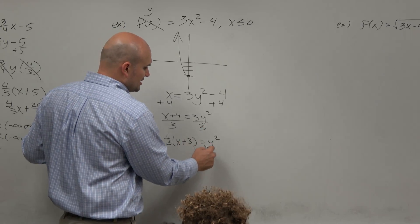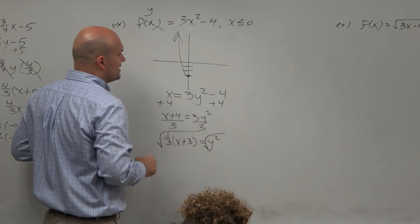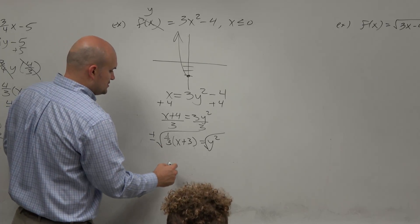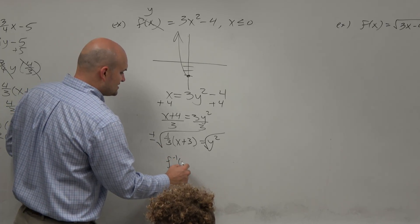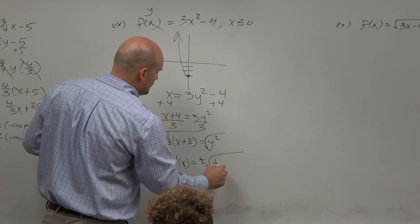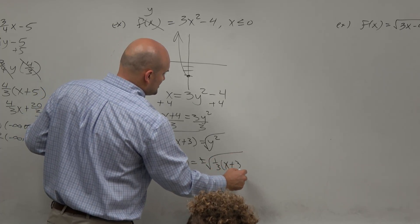Now to get rid of y squared, you're going to have to square root both sides. Please remember, guys, whenever you introduce square root, you have to include plus or minus. So therefore, f inverse of x equals plus or minus the square root of 1 third x plus 3.